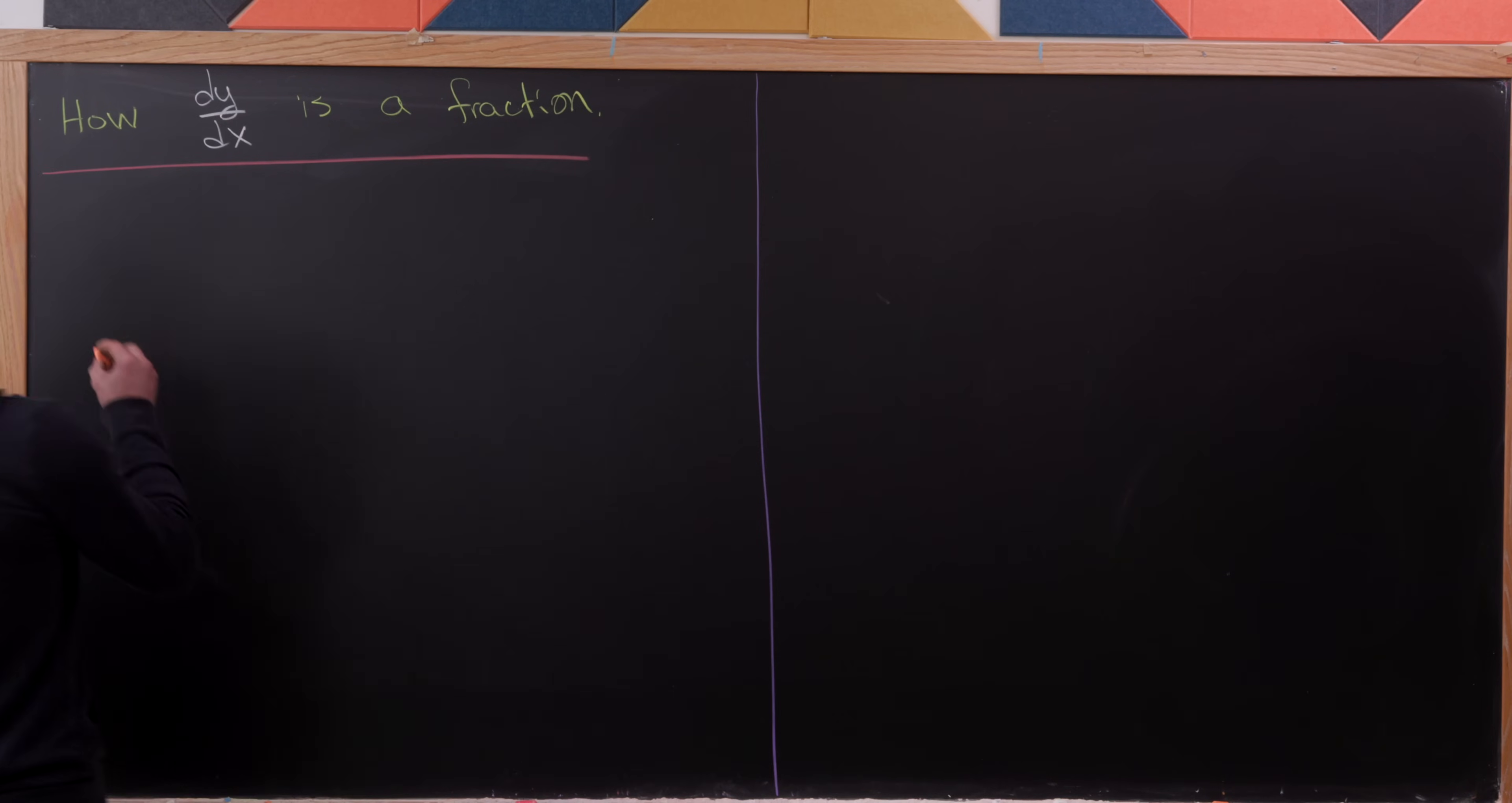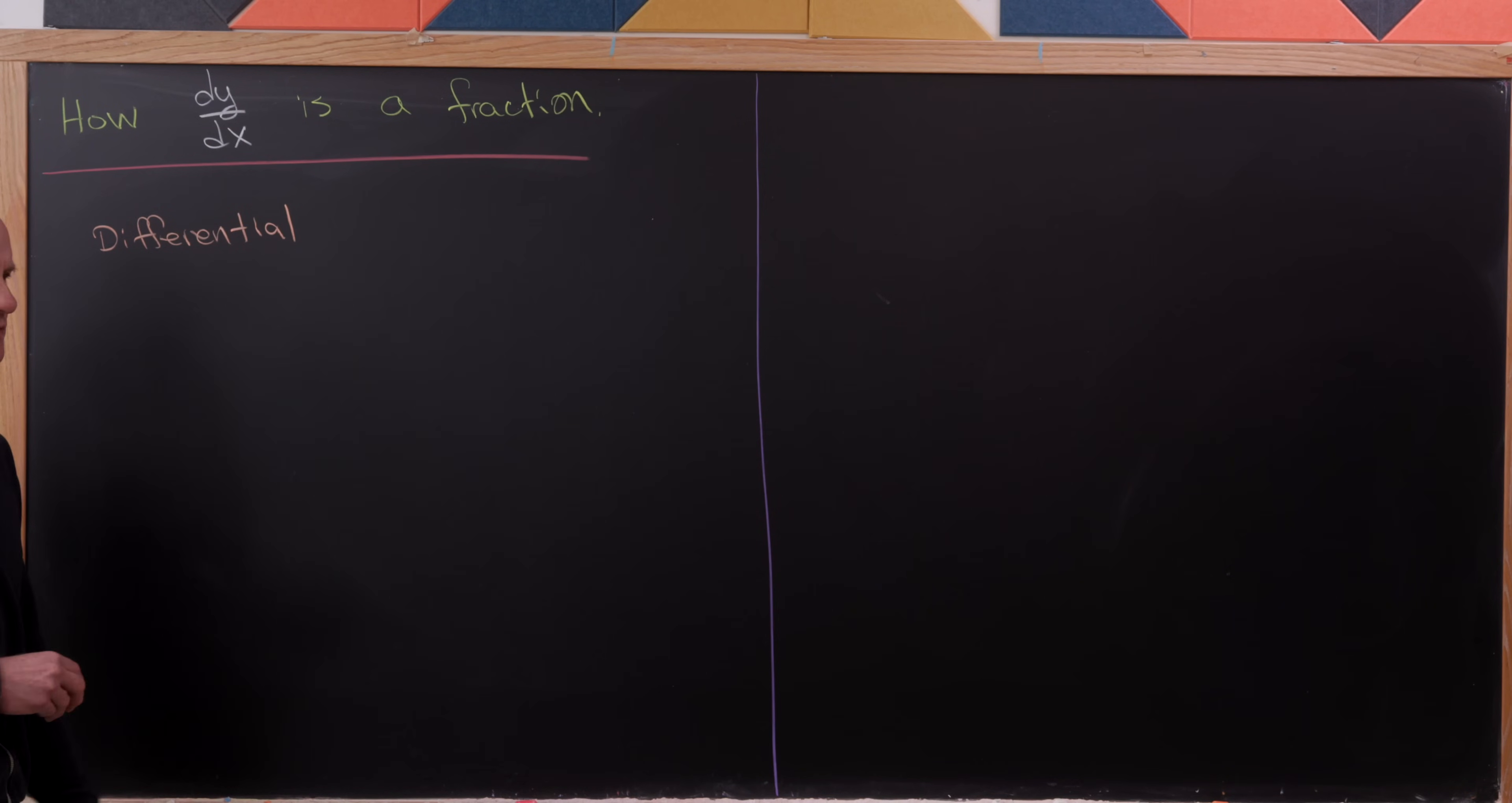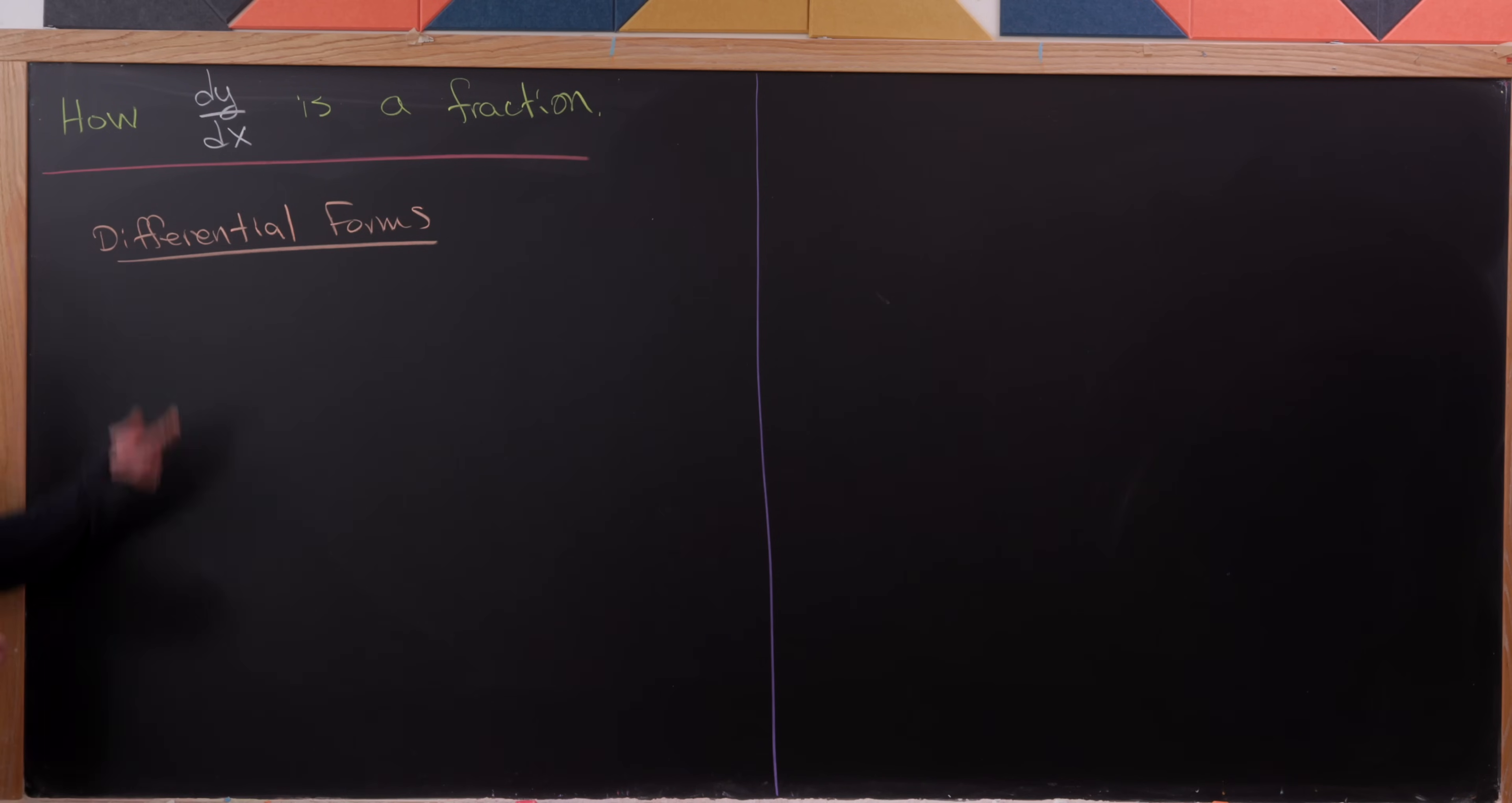So in order to do that, we're going to need to look at something called a differential form. I made a whole lot of videos on differential forms when this channel was really young, but we haven't looked at them for a while. So let's look a little bit about differential forms in order to maybe show how dy by dx is really a fraction.